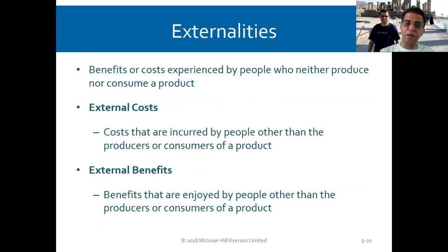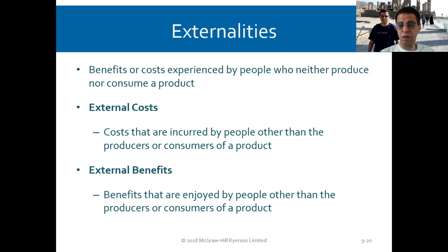Externalities are benefits or costs experienced by people who neither produce nor consume a product — for example, living beside a plant that produces pollution is a cost on you. External costs are costs incurred by people other than producers or consumers of the product. External benefits are benefits enjoyed by people other than producers or consumers, like finding an oil well managed by the government.